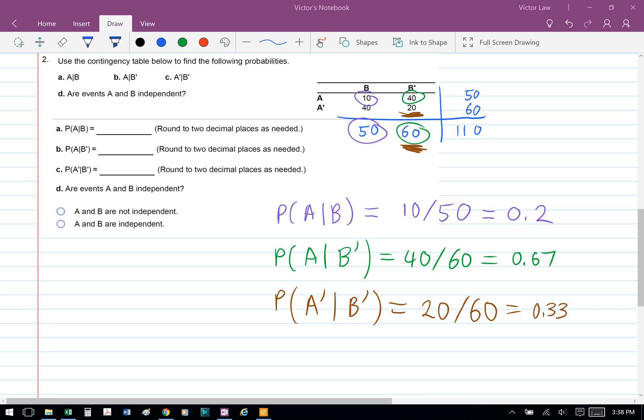For part C, we're asked to calculate the probability of A' conditioned on B'. We're looking at column B', which has a total of 60, and under column B', A' occurs 20 times. So we have 20 over 60 as the probability of A' given B', which is 0.33.